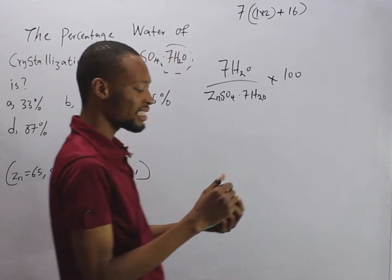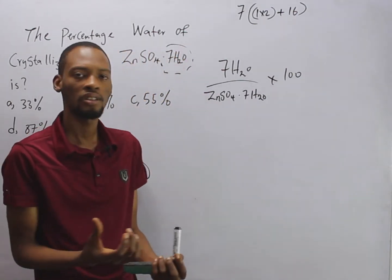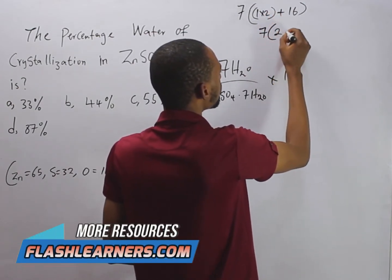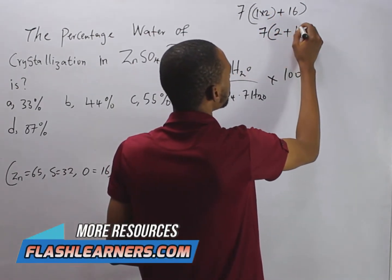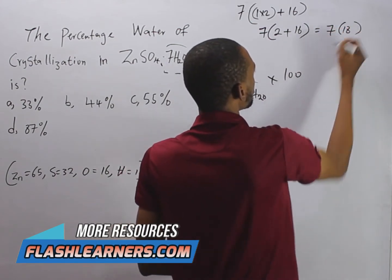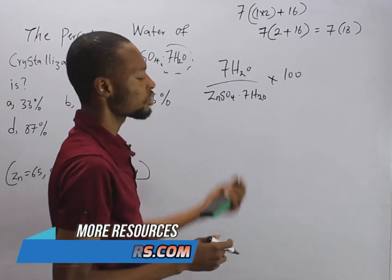This is how we calculate the total mass of a compound. This is 7 times—1 times 2 is 2 plus 16. So this is simply 7 times 18. That is the mass of water.